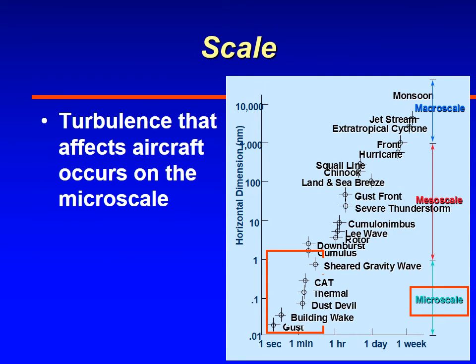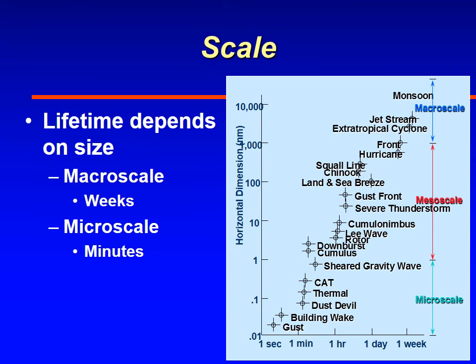The turbulence that affects an aircraft typically occurs on the microscale — these are smaller-scale phenomena. Things like clear air turbulence (that's what CAT is), thermals, which you're probably familiar with if you're flying during the summertime, and even eddies downwind of buildings that affect aircraft performance. The lifetime of these eddies depends upon their size.